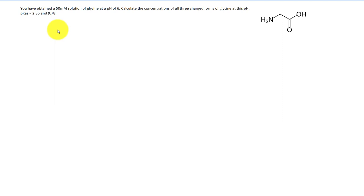Hi folks. Today we're going to talk about how to calculate the amount of a specific charge form of an amino acid at a given pH. This question starts out simple: we have obtained a 50 millimolar solution of glycine at a pH of 6. Calculate the concentration of all three charge forms of glycine at this pH, given the pKa values.